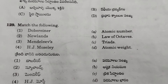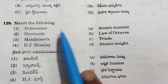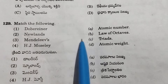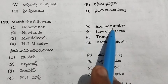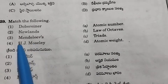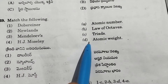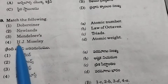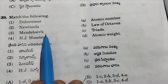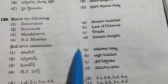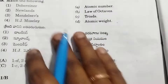Next, match the following: Dobereiner — triads, option C. Newlands — octaves, option B. Mendeleev arranged elements by atomic weight. Moseley arranged by atomic number. So the corrected match gives option B as correct.